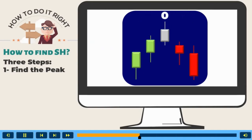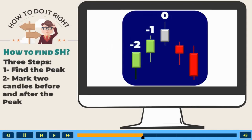Step 2, mark the two candles before the zero candle as minus 1 and minus 2, and after zero candle as plus 1 and plus 2 accordingly.